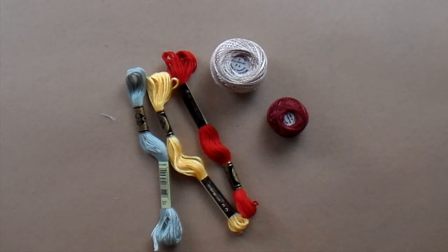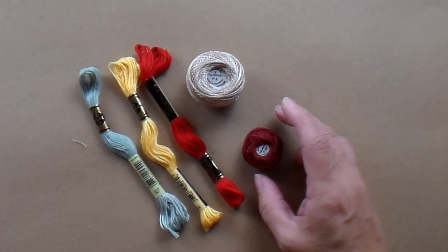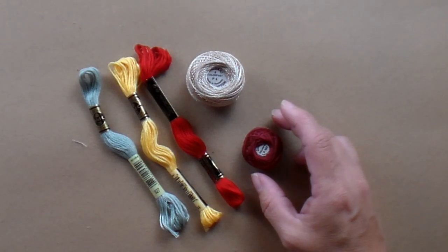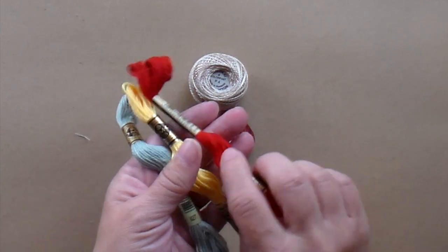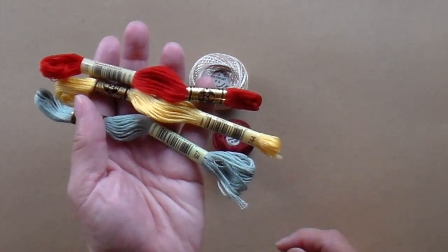Punch needle embroidery is done with embroidery floss, pearl cottons, or other things that are the equivalent size. You can find DMC embroidery floss like this at most hobby stores.